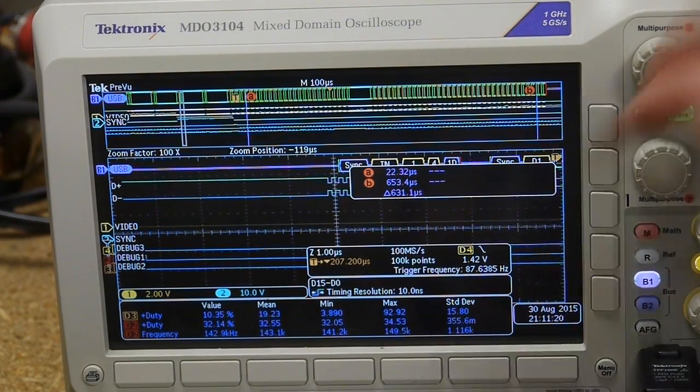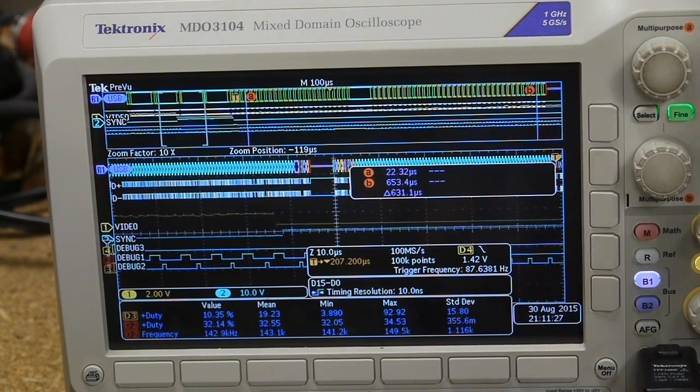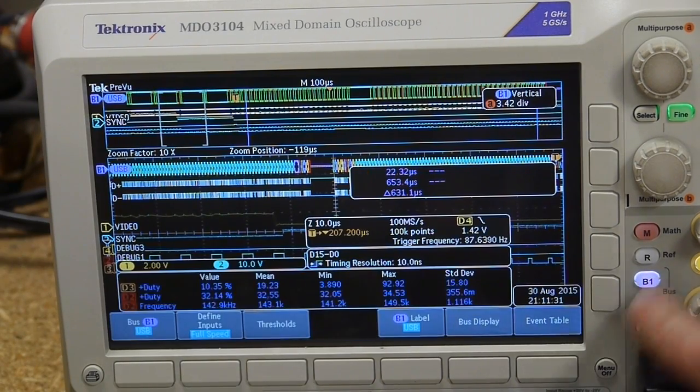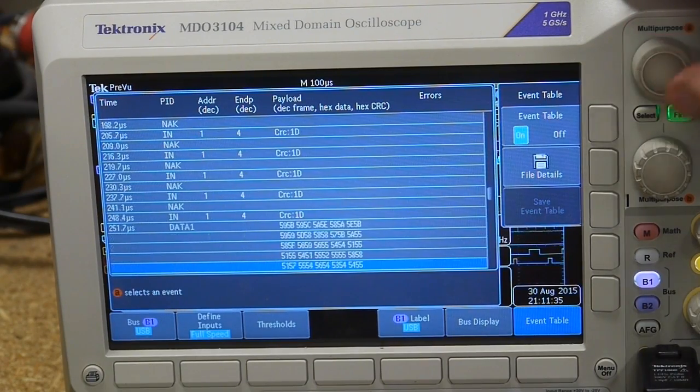But alternatively, what we can do is pull up the event table. This is just a listing of all the data that's gone through that USB pipe in this particular acquisition.